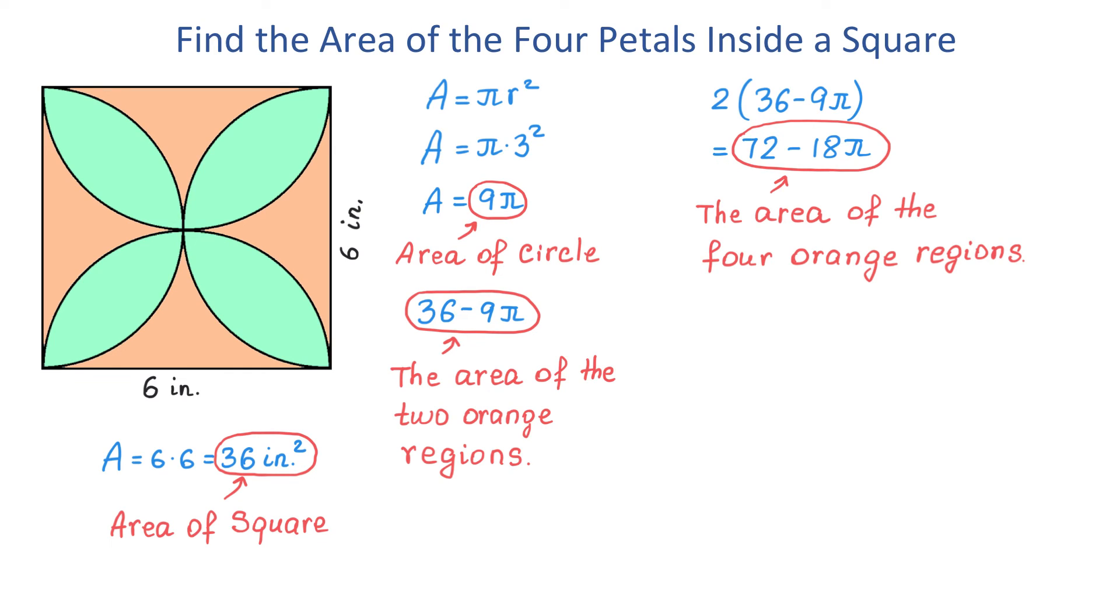Once we found this area, to find the area of these four petals, we will take the area of the square and subtract the area of these four regions. The area of the square is 36 and we are subtracting the area of these four orange regions, that is 72 minus 18 pi.